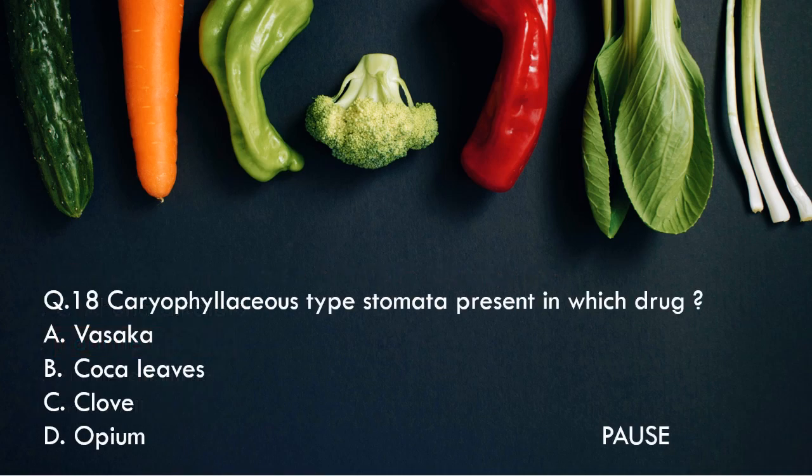Question 18: Caryophyllaceous type stomata are present in which drug? Option A, Vasaka. Option B, Eucalyptus. Option C, Clove. And option D, Opium. And the right answer is Vasaka. So Vasaka contains caryophyllaceous type of stomata.